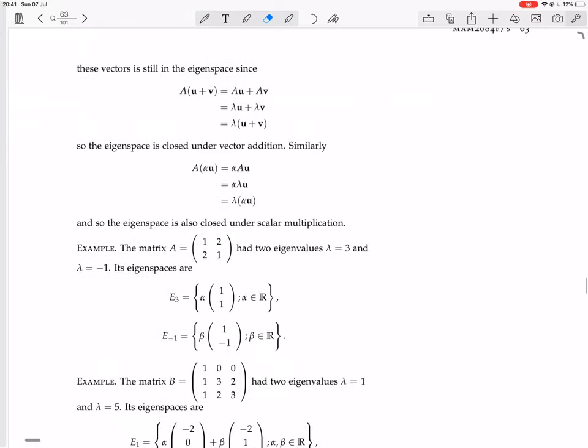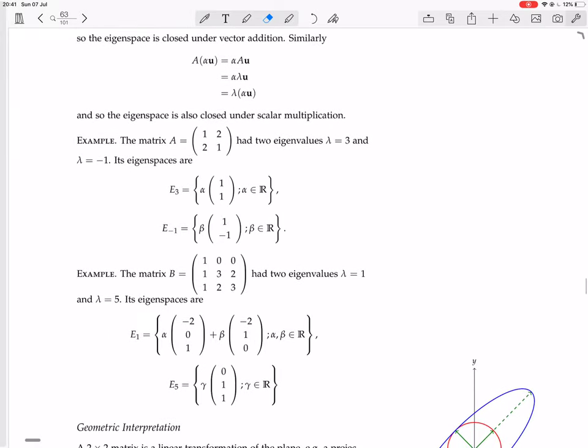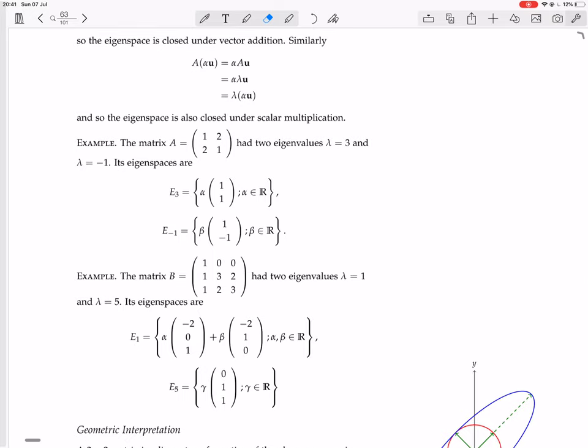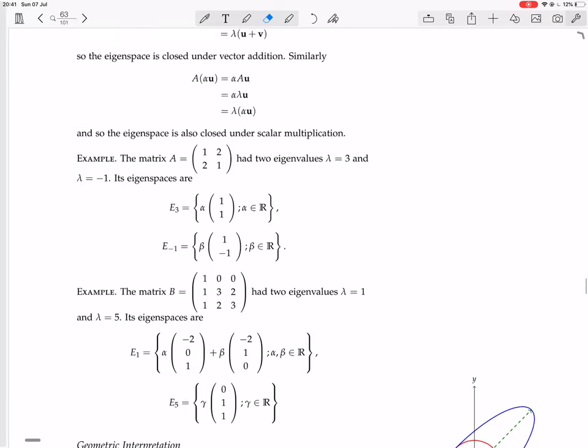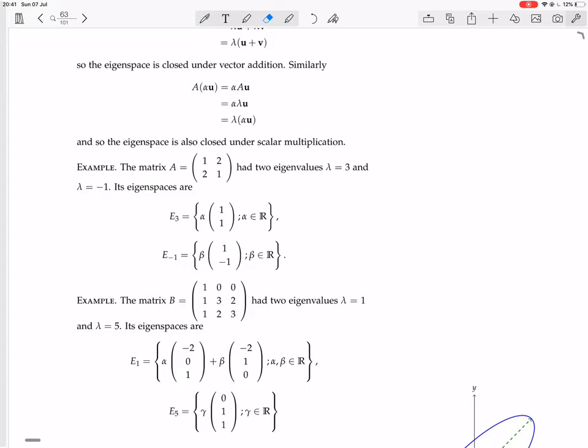Okay, so in the two examples we did before, we had this matrix with, remember, we had this matrix that had two eigenvalues, three and minus one, and these were its eigenspaces, we got these eigenspaces, one, one, and one, minus one, so the eigenspaces then were these two things, which are just lines, basically, in R2.